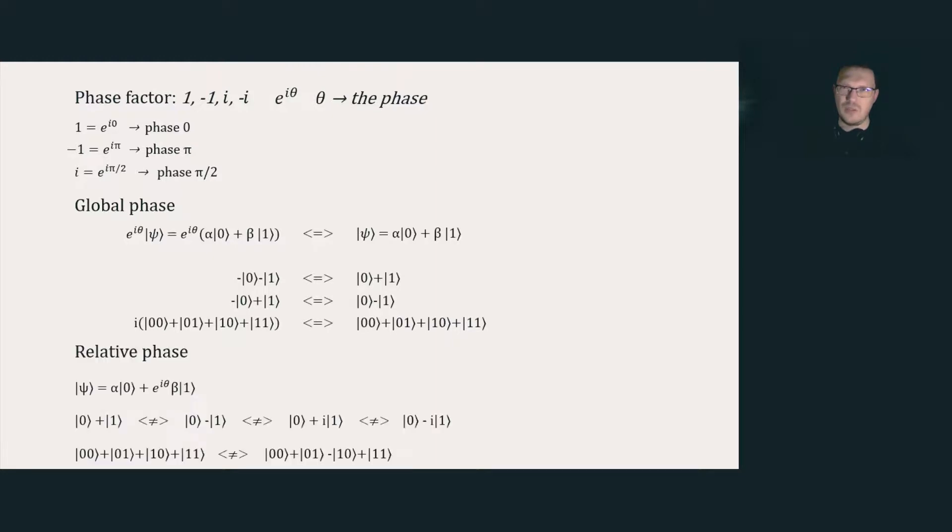But there is also a relative phase, which means a difference in phase factors between the terms of a superposition. This kind of phase cannot be ignored and is generally very important in many quantum algorithms, like Grover's search, the quantum Fourier transform, phase estimation, and so on. This relative phase is what creates the famous quantum interference.